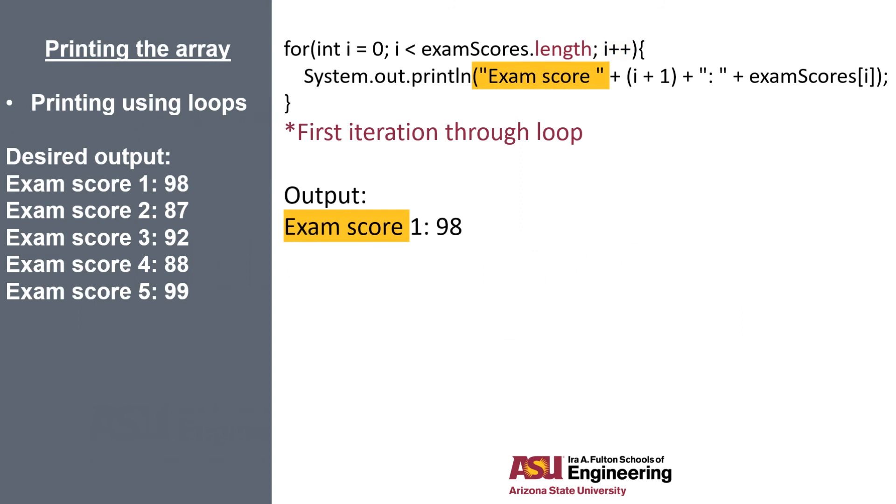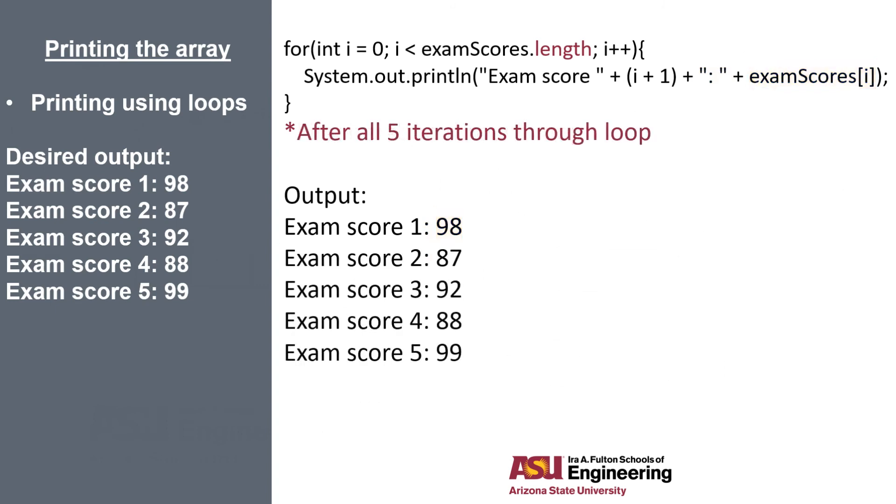So for the first pass through of our for loop, we're printing exam score i plus 1 because our scores are labeled 1 through 5, the colon, and finally our data, which is the exam score at i. And we've told our for loop to go through 5 iterations. So this is what our final output will look like.